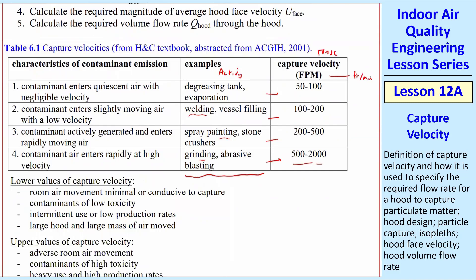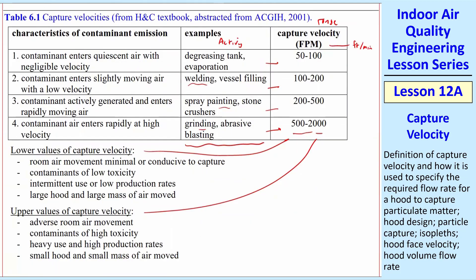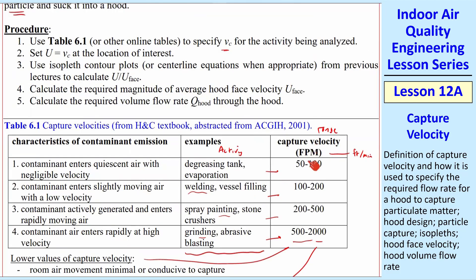There's a range. The lower value and the upper value are determined by these criteria. If you have low room movement of the air, low toxicity, etc., as you can see there, we use the lower value. If you have lots of room air mixing going on, lots of contaminants of high toxicity, etc., you use the high value. And you can see the range is pretty large here. This is the VC here.